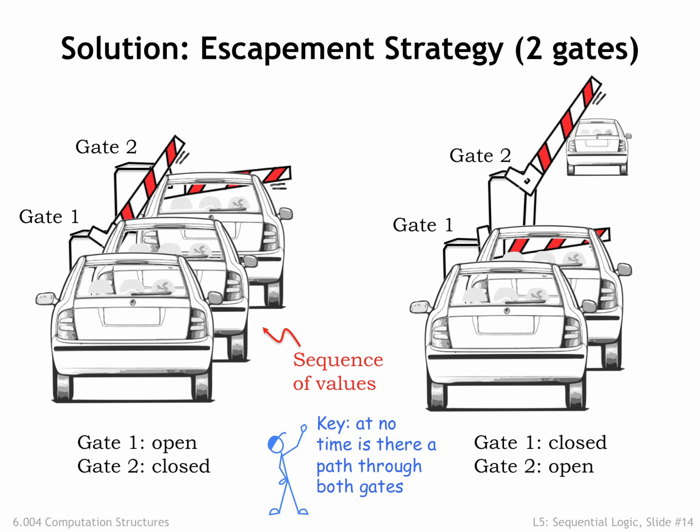If we observed the tollbooth's output, we would see a car emerge shortly after the instant in time when gate 2 opens. The next car would emerge shortly after the next time gate 2 opens, and so on. Cars would proceed through the tollbooth at a rate set by the interval between gate 2 openings.